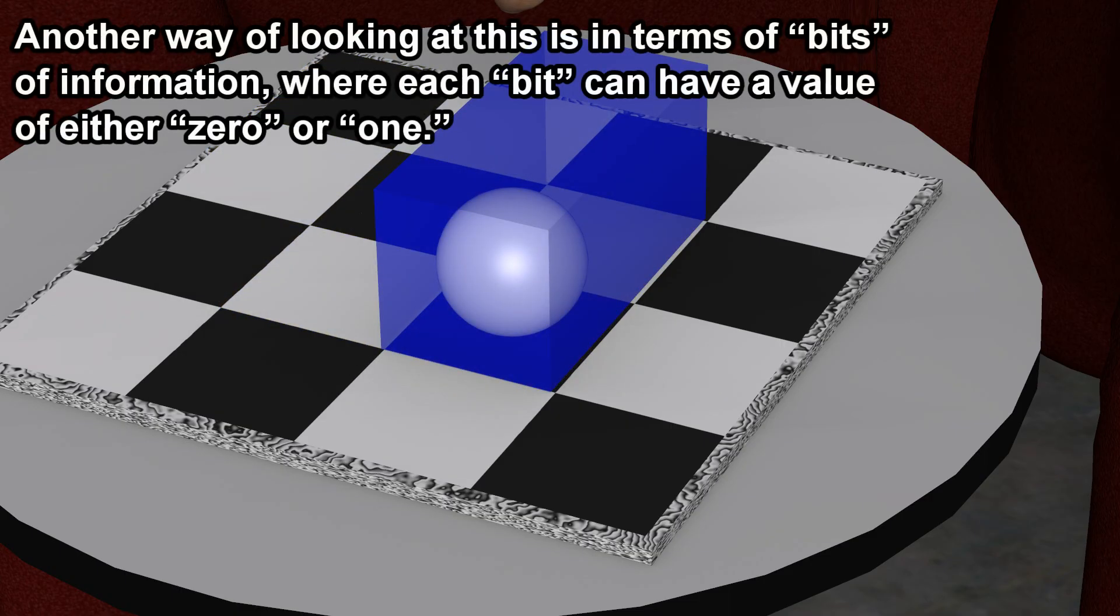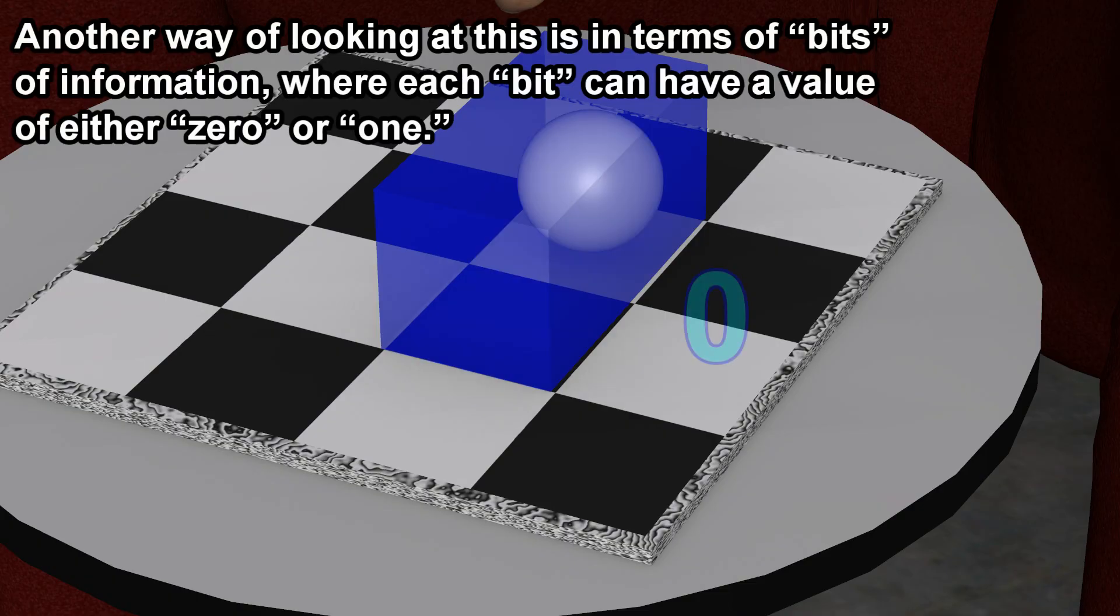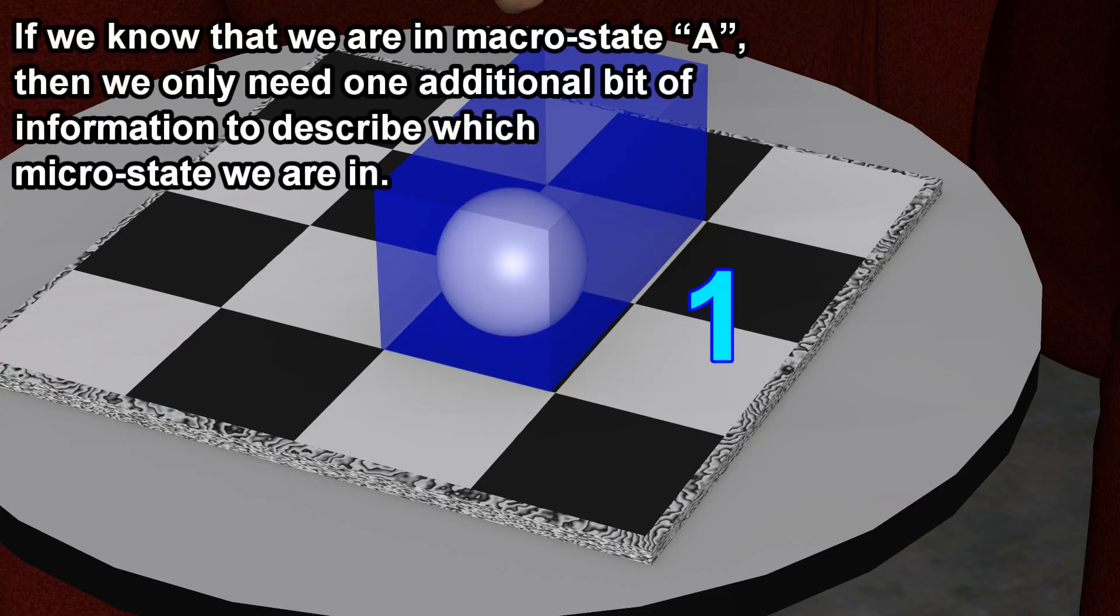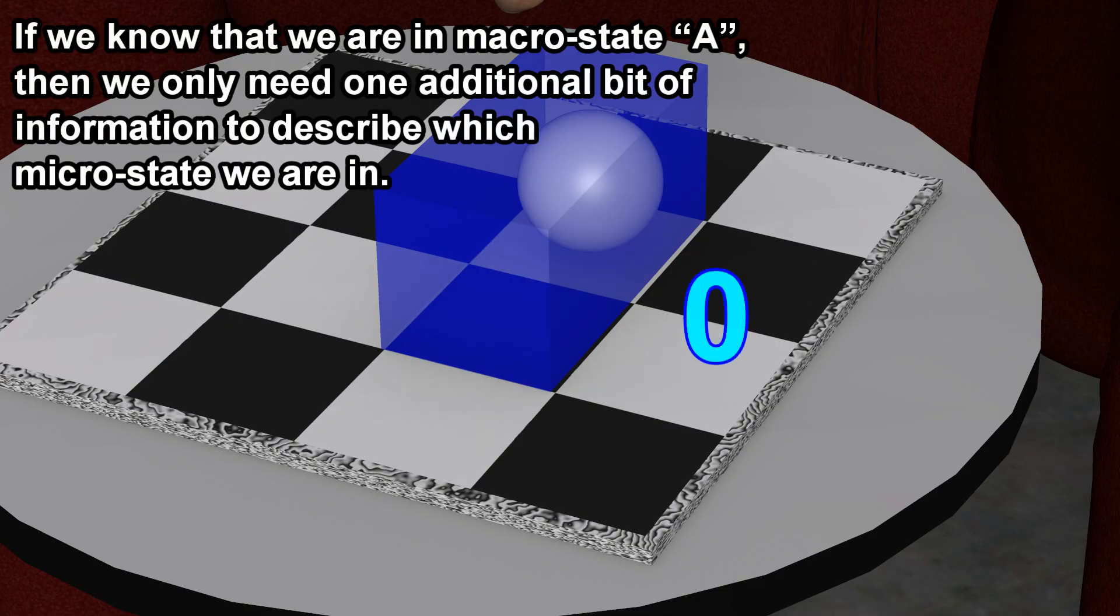Another way of looking at this is in terms of bits of information, where each bit can have a value of either zero or one. If we know that we are in macrostate A, then we only need one additional bit of information to describe which microstate we are in.